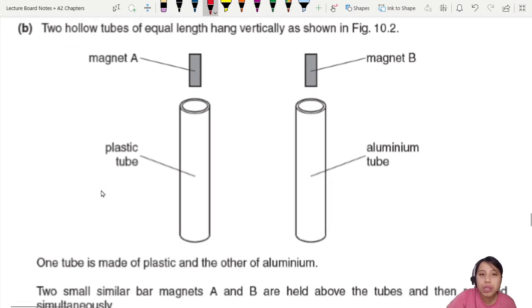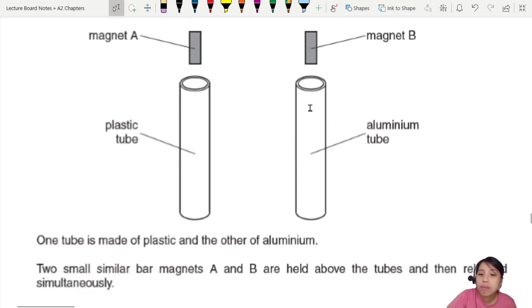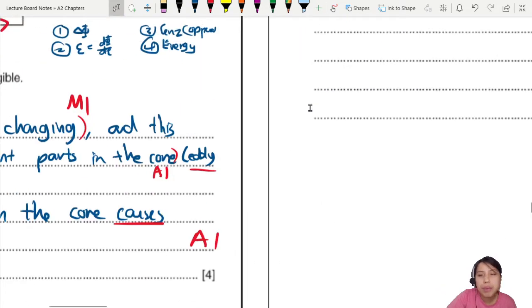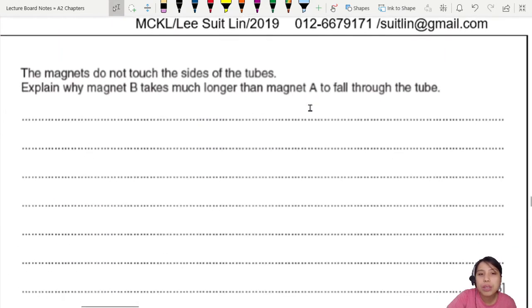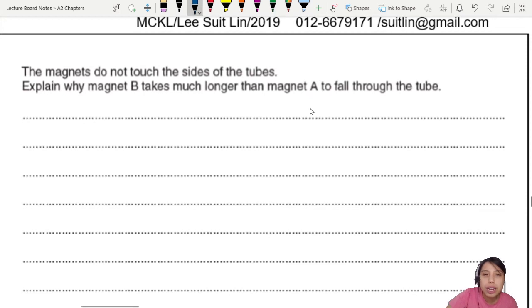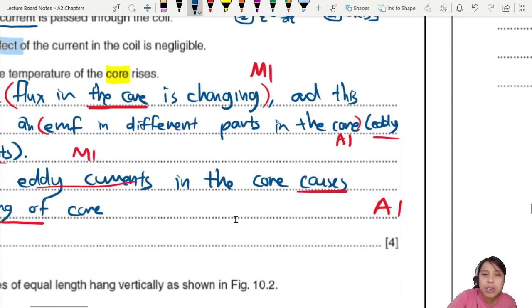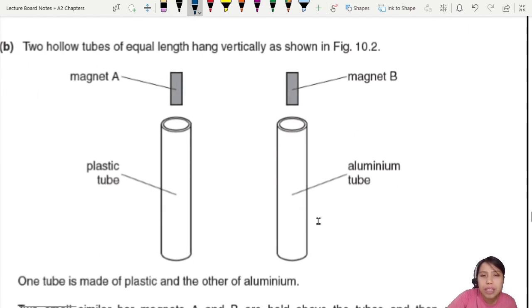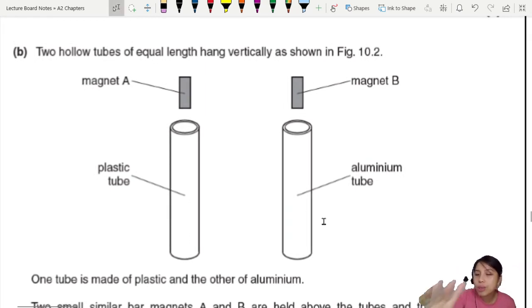Okay, here we have two hollow tubes, left and right, hang vertically. And then you drop a magnet through it. Have you seen before this demo? We'll look at it later. The magnet do not touch the side of the tubes. What does that mean? Means no friction. No contact, no friction. So this tells me there's no friction. Explain why magnet B takes much longer than magnet A to fall through the tube. Maybe it will take longer than A, man. Means won't they drop the same speed? Hold it there. Let's go see some demos for ourselves.